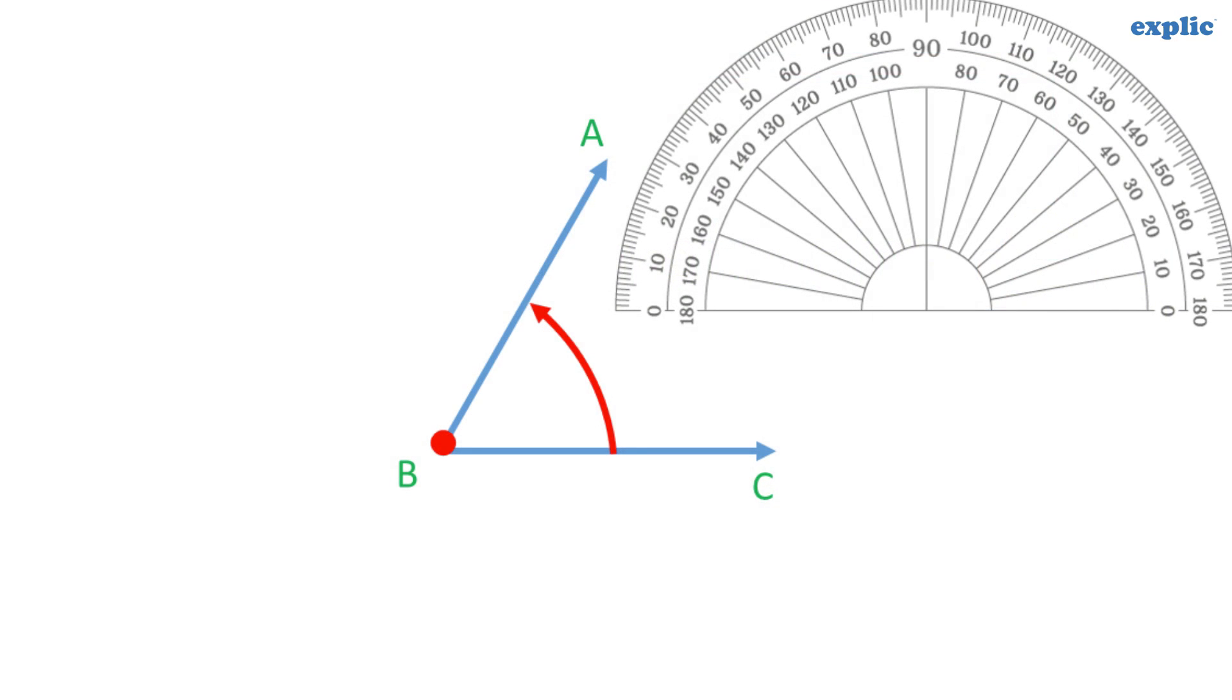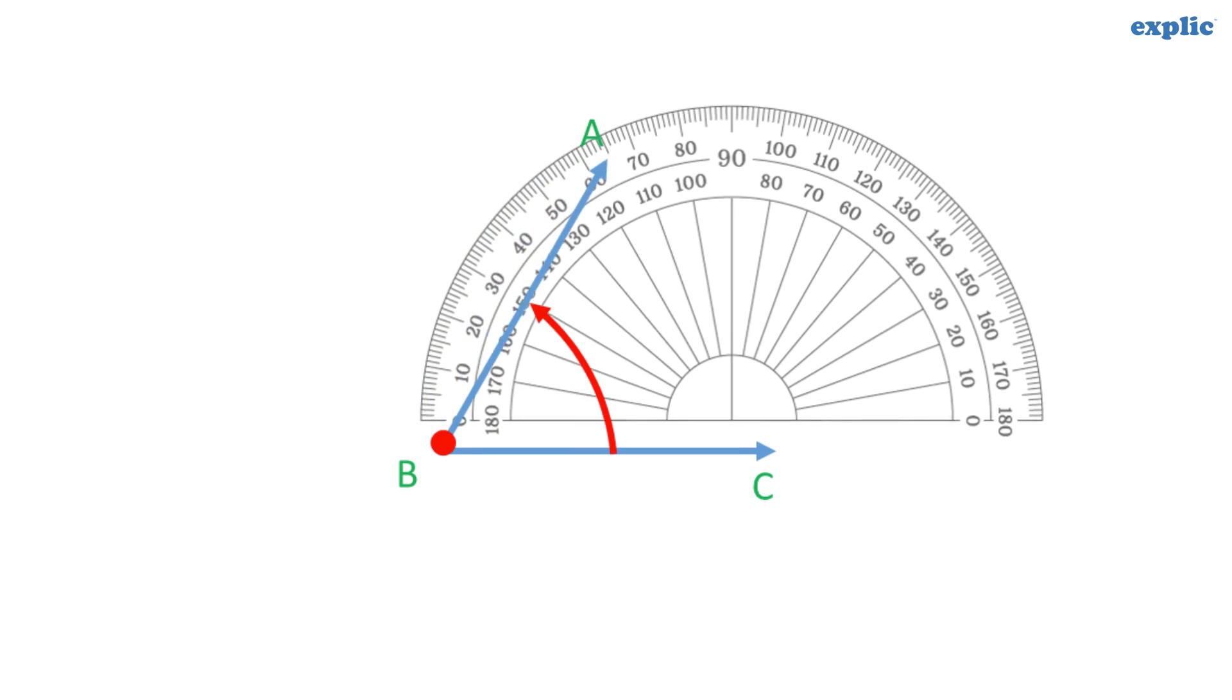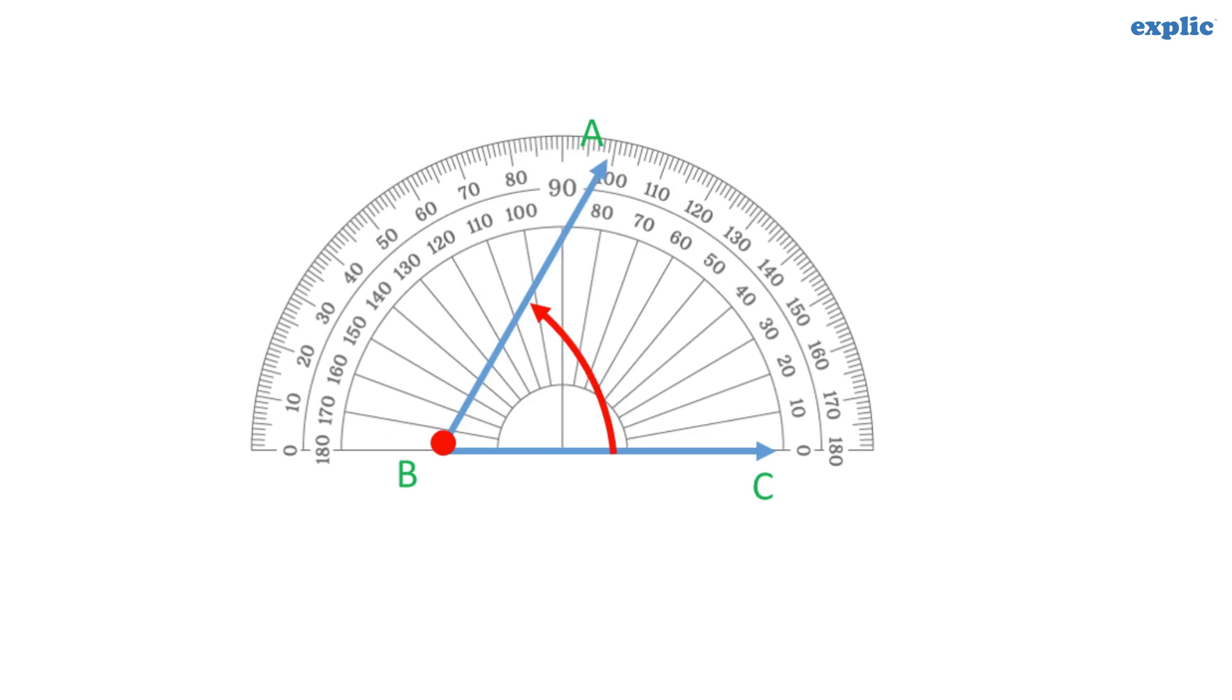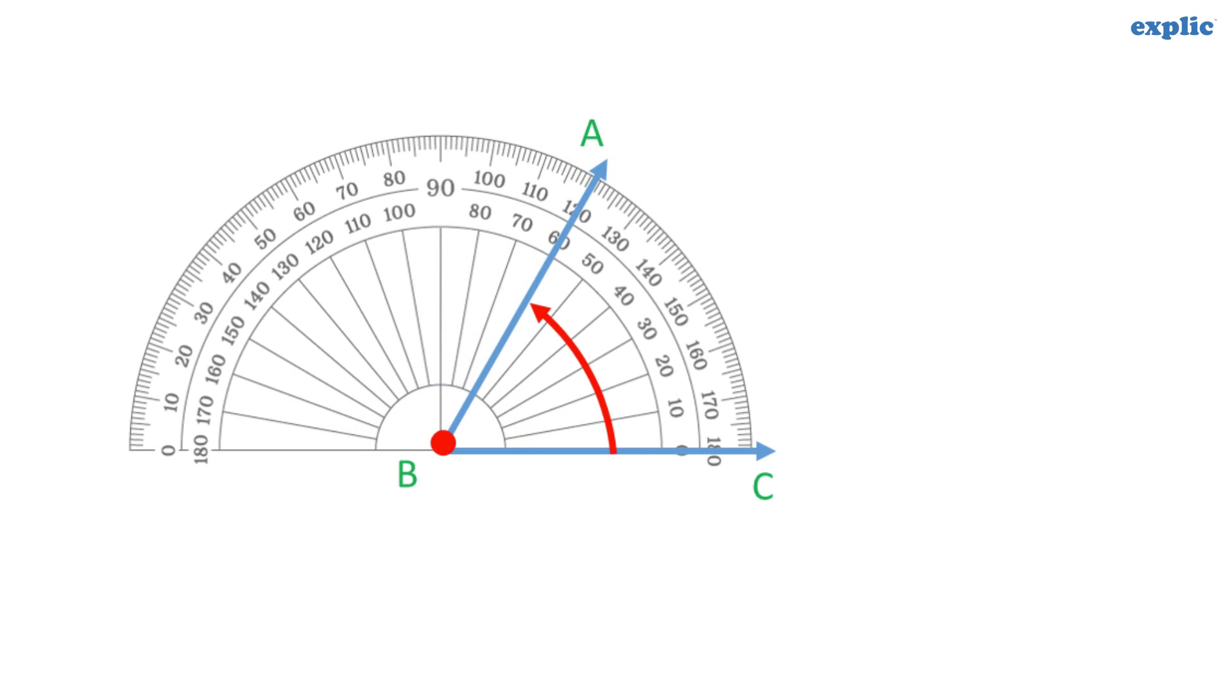Suppose we have to measure angle ABC. Align the 0 line of the protractor with line BC. Then match point B of the angle with the midpoint of the protractor.